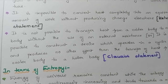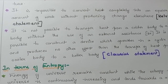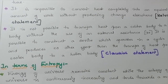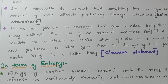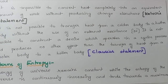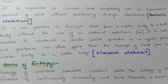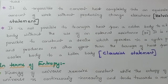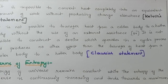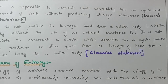The first statement in terms of entropy: the energy of the universe remains constant, but the entropy of the universe is continuously increasing and tends towards a maximum value. So entropy always tends to be at a maximum. This is the first entropy-based statement of the second law of thermodynamics.